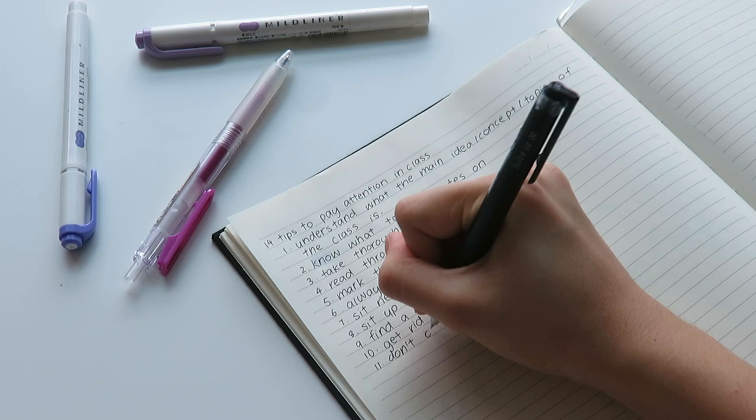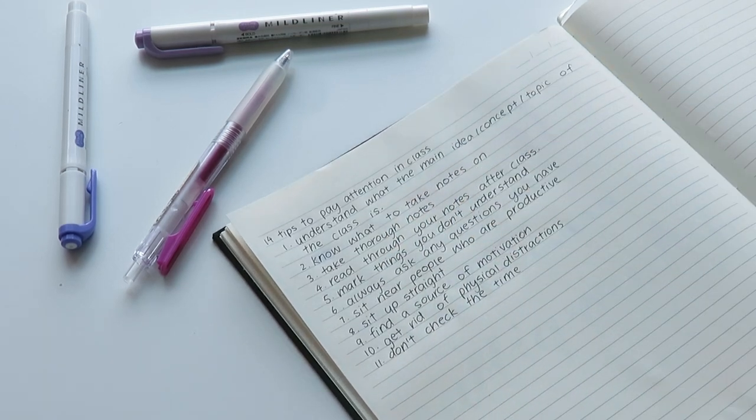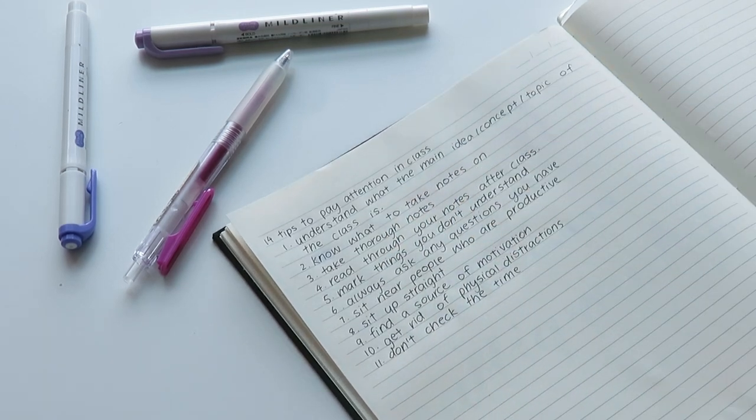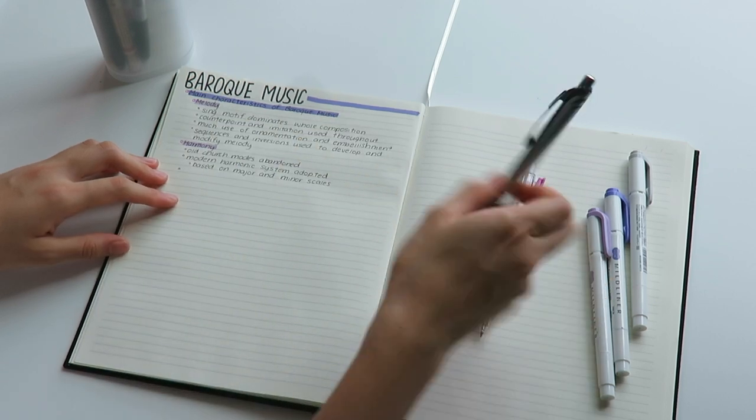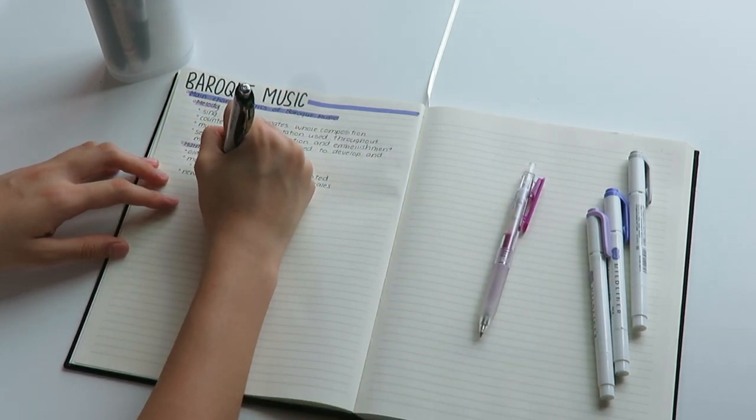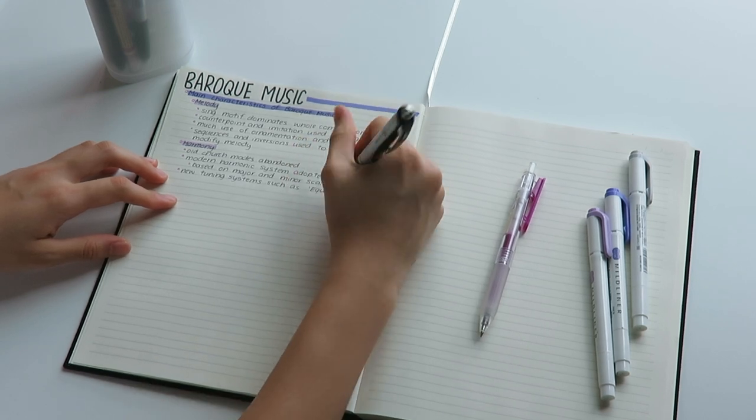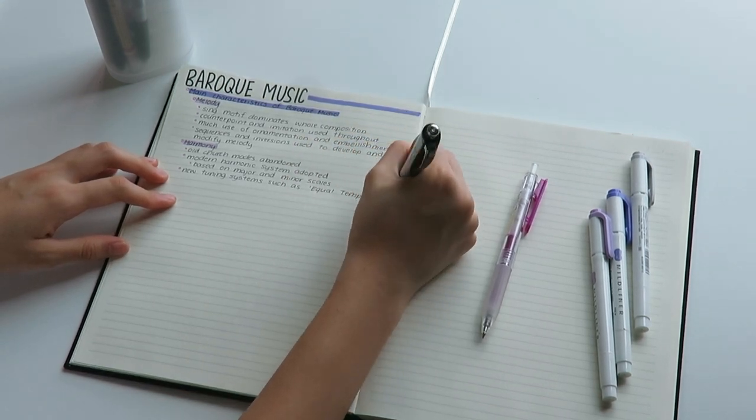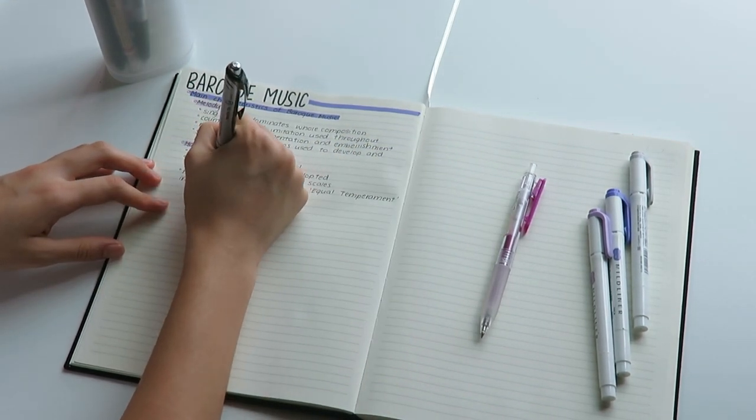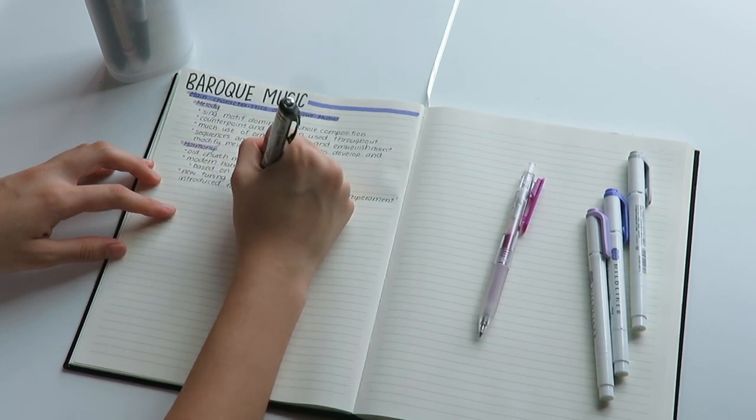The eleventh tip is don't check the time. Have you ever had to read something like an article and saw how long it was then decided not to read it? It's the same principle. If you check the time and see that you have only been in the class for ten minutes, it's very likely that you will feel unmotivated and not want to concentrate. Try to resist checking the time as this can decrease motivation.